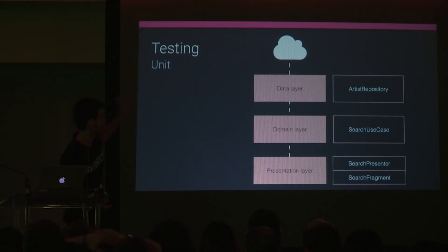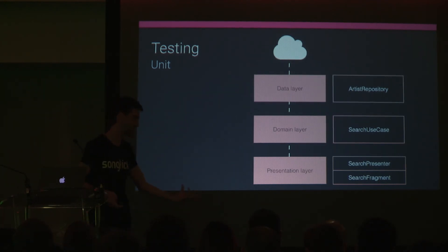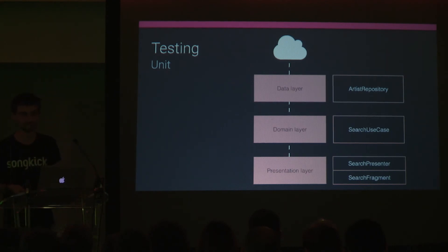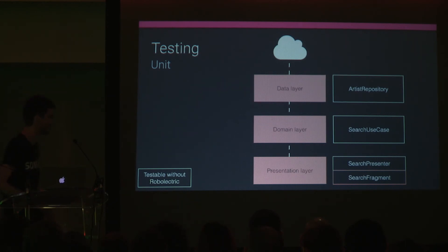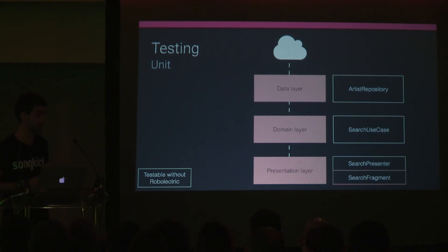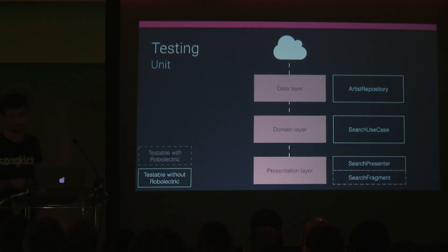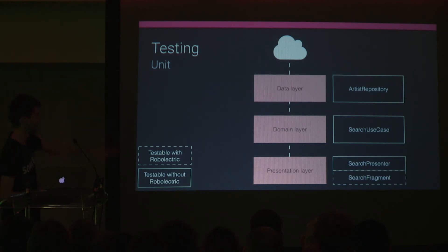Let's talk about testing. In the stack: the data layer has the Artist Repository, the domain layer has the Search Use Case, and the presentation layer has a Presenter and a Fragment. Most of it is just Java, so it should be testable without trouble. The main complication is Android weirdness — in some cases you might need Robolectric, but most components would have pure unit tests. The Fragment still has a lifecycle, so you'd need Robolectric there, but it's not that bad.